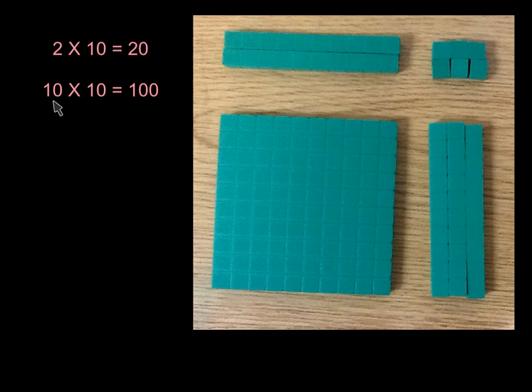10 times 10 is 100, so we'll write that down. The next partial product is a 3 by 10 rectangle. We'll write down 3 times 10 equals 30. So we know that this is 20 squares, this is 100, and this is 30.